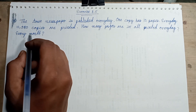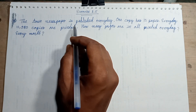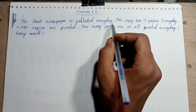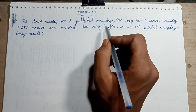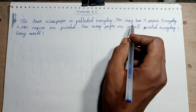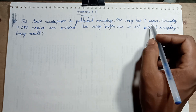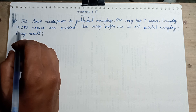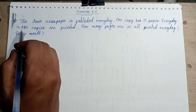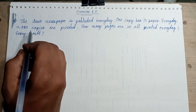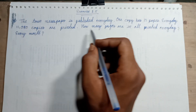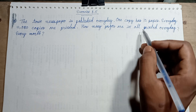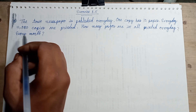Question number 5: The town newspaper is published every day. Every day, 1 copy has 12 pages. Every day, 11,918 copies are printed. How many pages are in all printed every day?